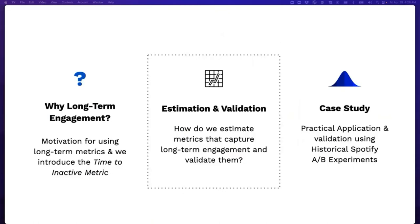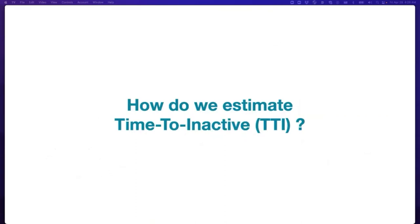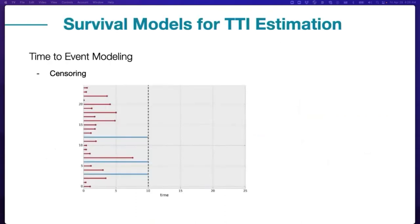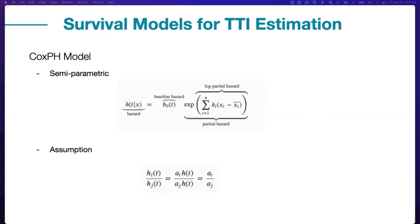Estimating time-to-inactive is a classic time-to-event modeling problem. It is challenging to use traditional ML models because some users might continue to be active for long periods of time and we often want to make inference before the event has happened. In the figure, each row represents a user and the dots indicate that the user has become inactive. The blue users are still active at the time we want to make inference, as denoted by the dotted line. Ignoring those users would lead to censoring bias and would severely underestimate the true time-to-event metric. Therefore we turn to survival modeling, which is a natural framework to study time-to-event problems as it accounts for censoring bias.